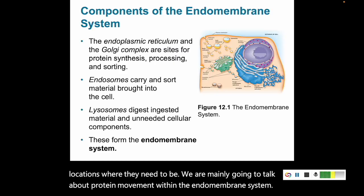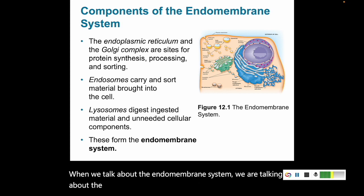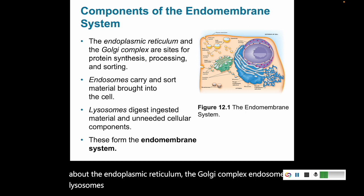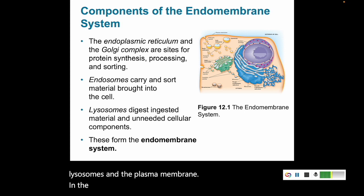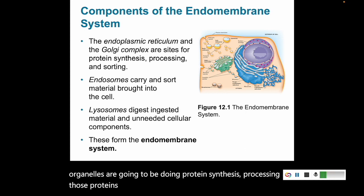When we talk about the endomembrane system, we are talking about the endoplasmic reticulum, the Golgi complex, endosomes, lysosomes, and the plasma membrane. In the endoplasmic reticulum and the Golgi complex, these two organelles are going to be doing protein synthesis, processing those proteins, and sorting those proteins.